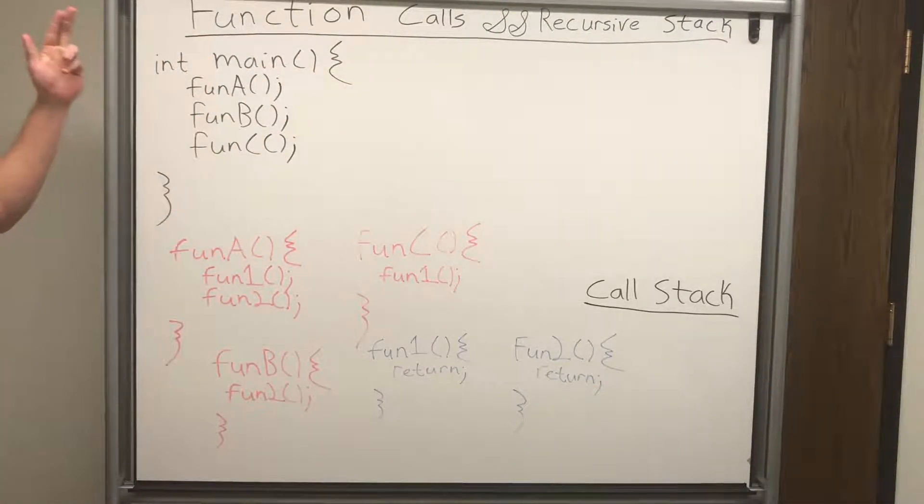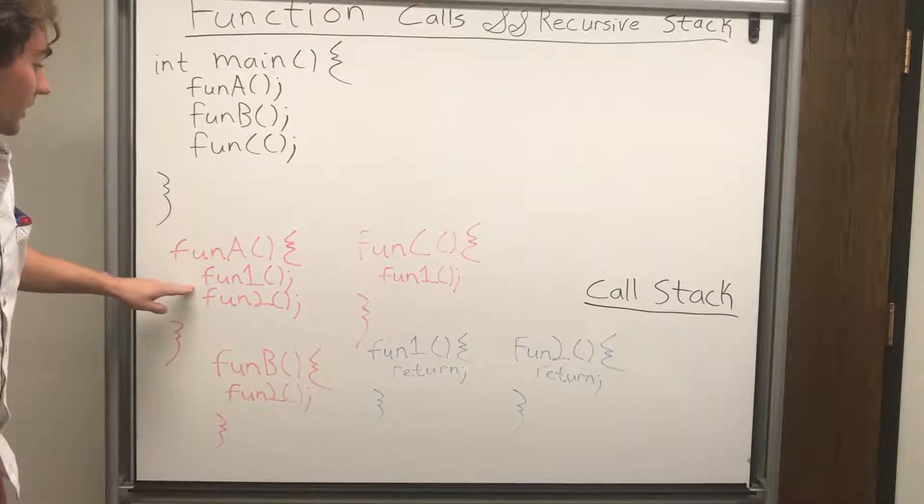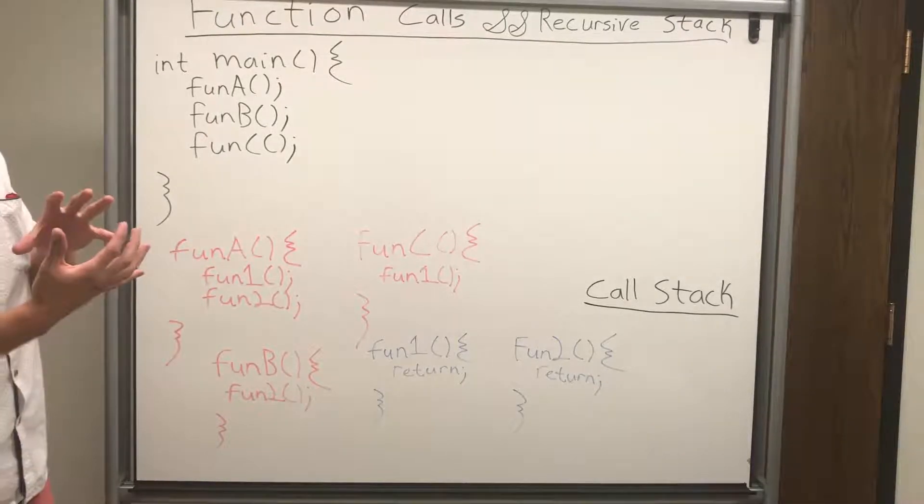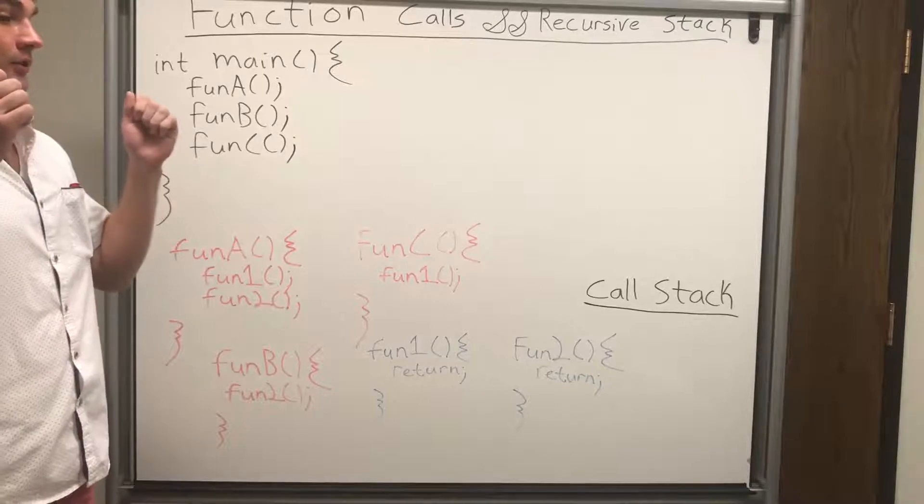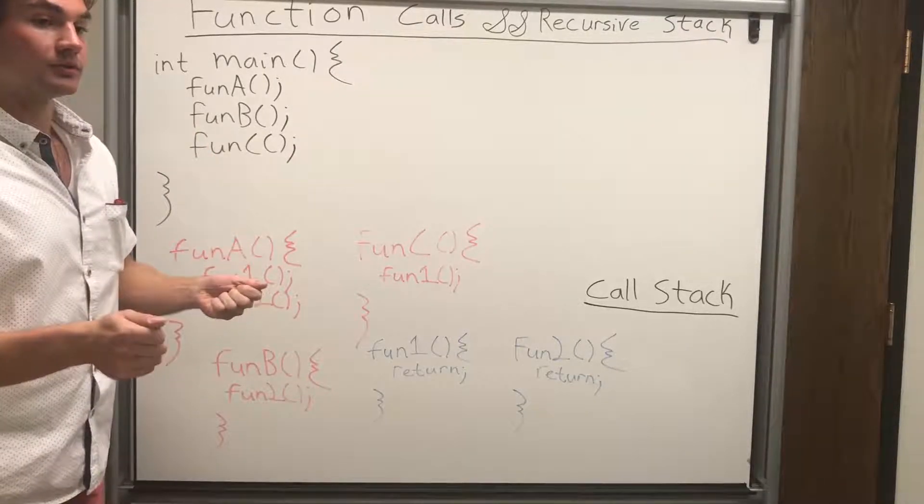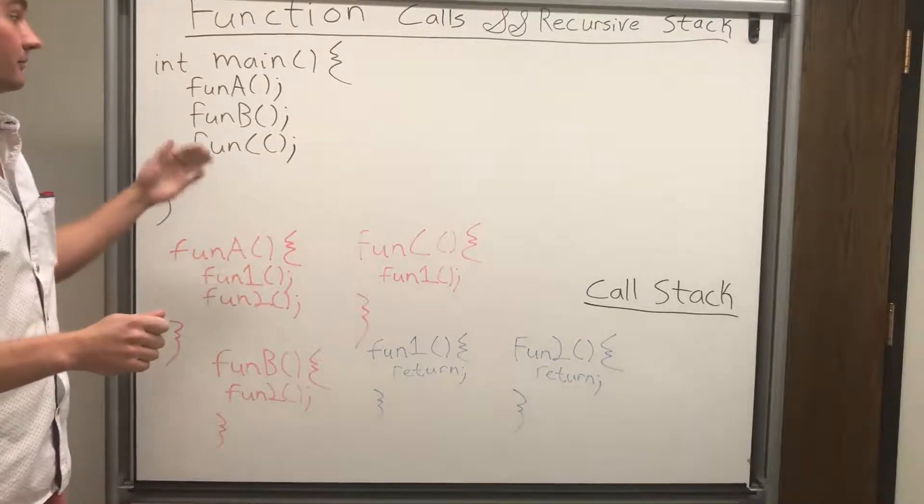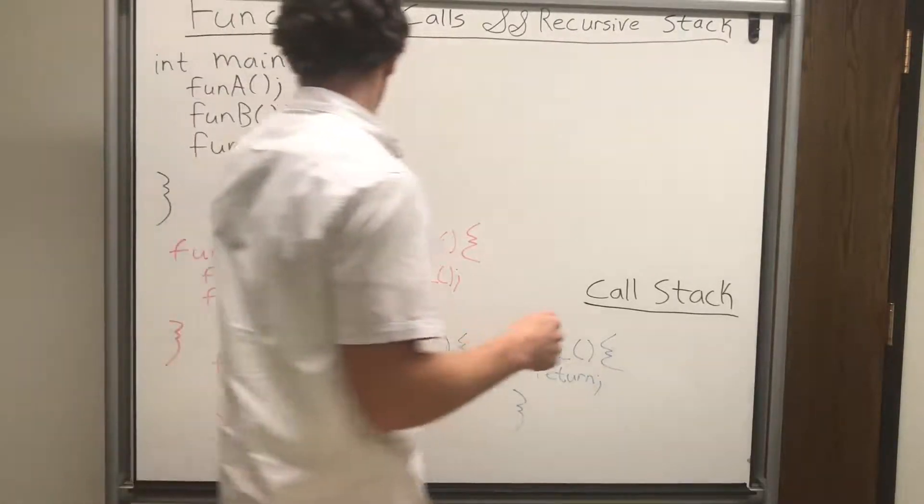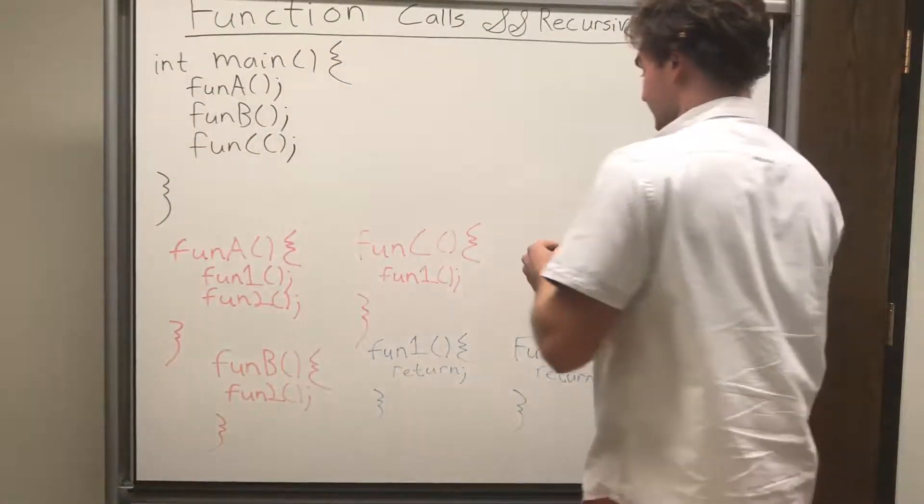So here we have a program called main that has function A, function B, function C, and these are subroutines. And inside these methods are other function calls to other functions. And they work like a stack. So the last one you do is the first one that needs to be completed before you can progress down.